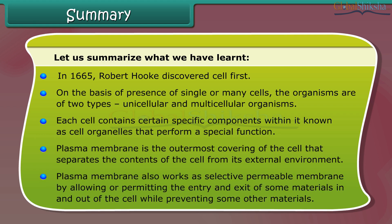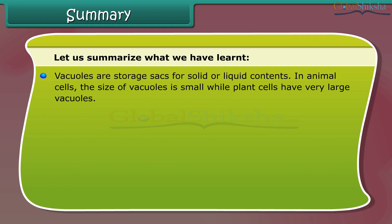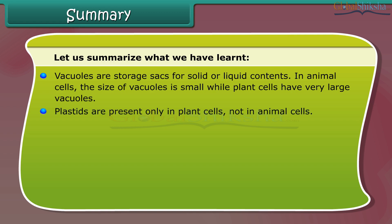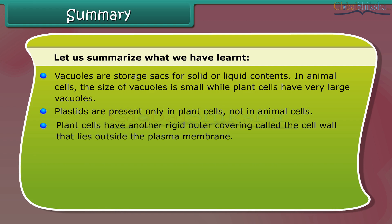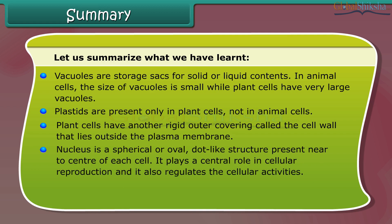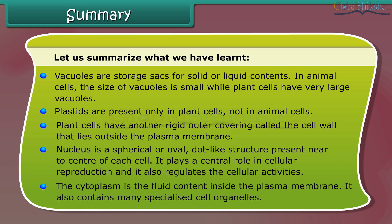The plasma membrane works as a selectively permeable membrane by allowing the entry and exit of some materials while preventing others. Vacuoles are storage sacks for solid or liquid contents; in animal cells they are small while in plant cells they are very large. Plastids are present only in plant cells. Plant cells have a rigid outer covering called the cell wall, composed mainly of cellulose, which provides strength. The nucleus plays a central role in cellular reproduction and regulates cellular activities. The cytoplasm is the fluid content inside the plasma membrane and contains many specialized cell organelles.